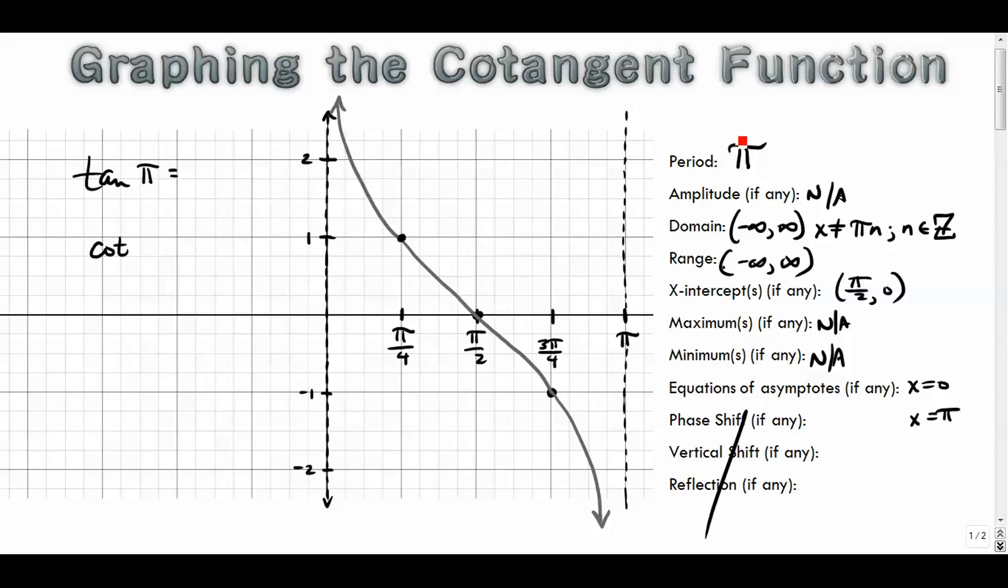The next set of videos, I'm going to walk through how to work with transformations. When we change the a value it affects amplitude, the b value is going to affect our period, the c value is going to affect our phase shift, and then finally, the vertical translation will be affected by our d value. And we'll also look at some reflections where the a value is negative. So I hope this helped, and I look forward to the next ones. Thanks for watching. I'll see you next time.